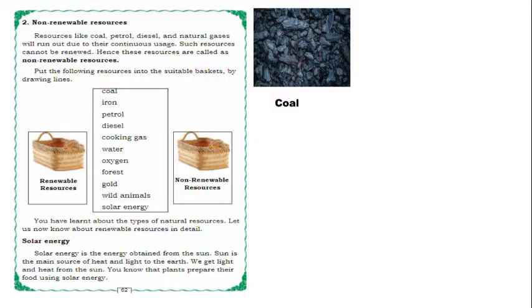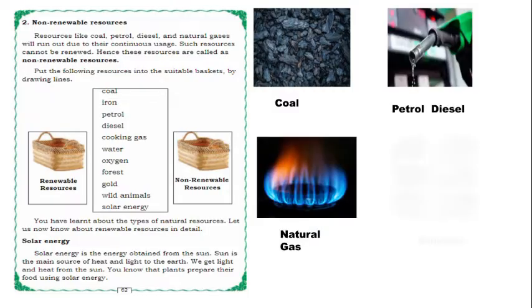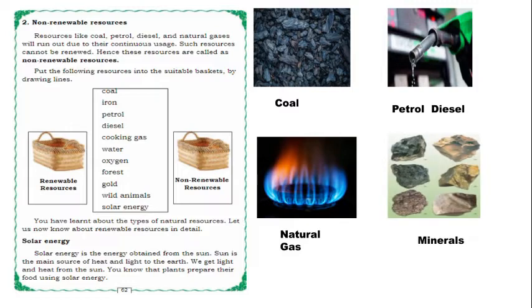The next is non-renewable resources, which are opposite of renewable resources. Resources like coal, petrol, diesel, and natural gases will run out due to their continuous usage. If you use these continuously, they will finish — they will get exhausted. That type of resources are called non-renewable resources. These resources will not renew or reproduce.